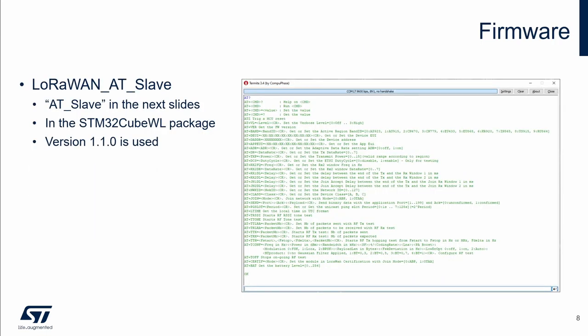We use LoRaWAN AT-Slave firmware in this example. For simplicity, I will use only the name AT-Slave in the next part of this video. It is available in the STM32CubeWL package — version 1.1.0 was used in this particular case; other versions may behave differently. A description of all AT commands can be found in application note AN5481.